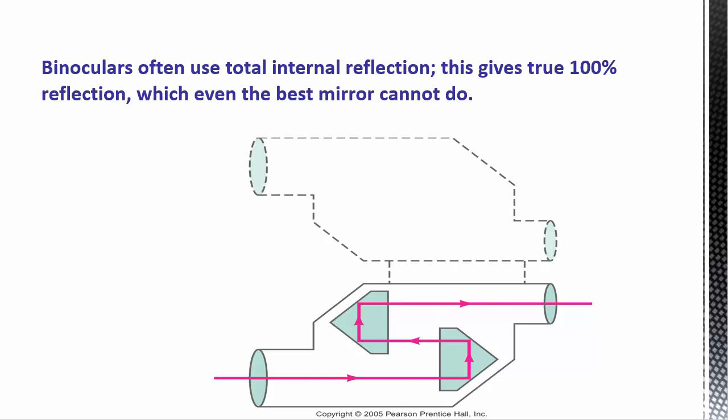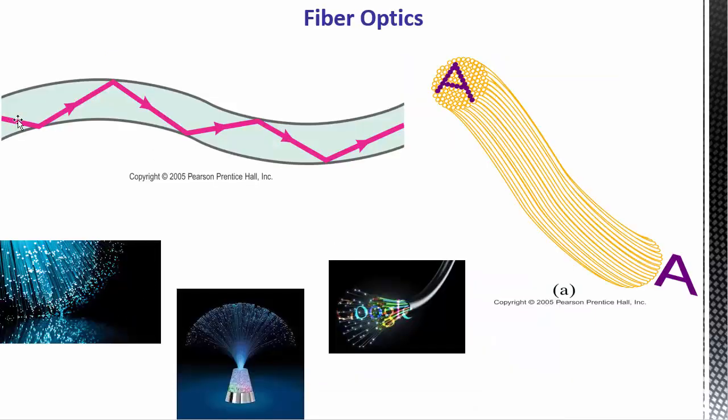And another cool application is what is called a fiber optic. So what's going on there is you have sort of a glass tube, but it's flexible. I guess it's plastic. I don't know what it's made of. But they coat it with a reflective surface on the inside. And so as long as you're always at beyond the critical angle, you can send a beam of light through there. And you can even bend this plastic tube. So you get all these tubes.